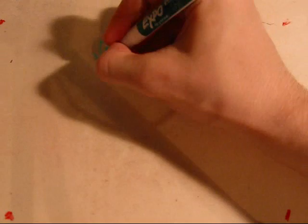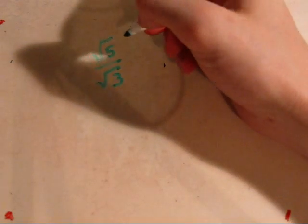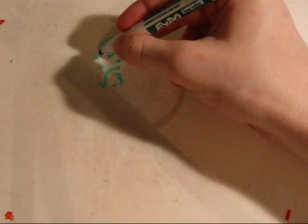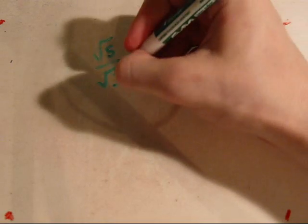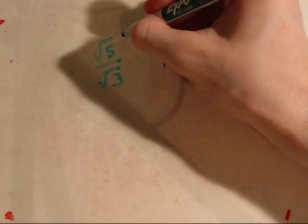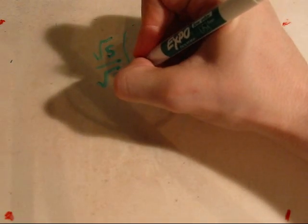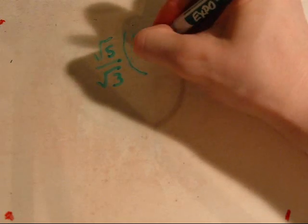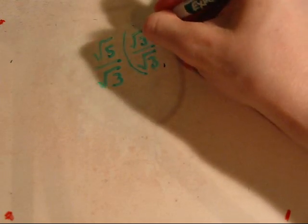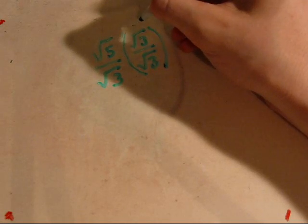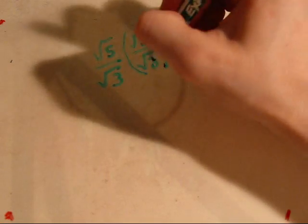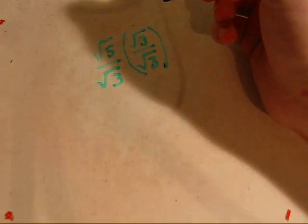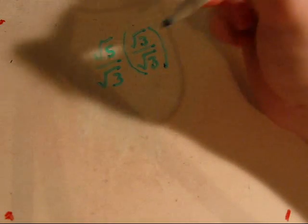If you want to rationalize a denominator, for example, the square root of 5 over the square root of 3, you take this number and multiply it by the denominator over itself, which is going to equal 1. But since it's done this way, it's going to be the square root of 3 squared, which is going to be 3, because the square roots and squares cancel each other out.